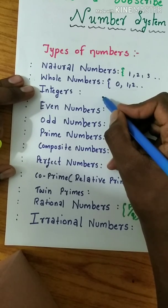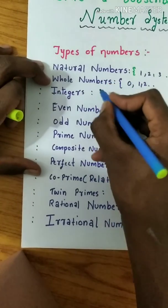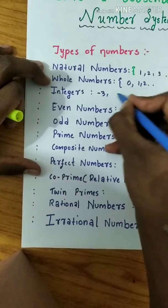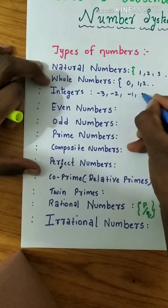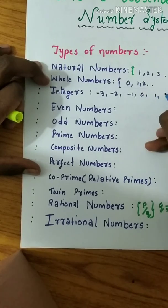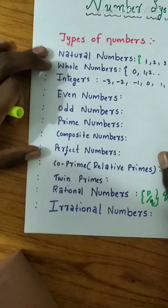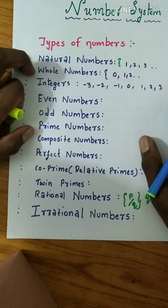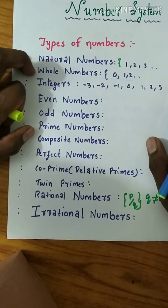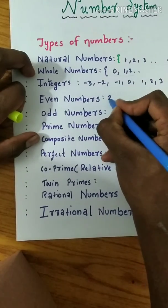Examples of integers: -3, -2, -1, 0, 1, 2, 3, etc. Even numbers - a counting number divisible by 2 is called an even number. Examples are 2, 4, 6, 8, and so on.